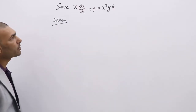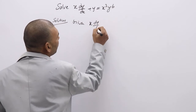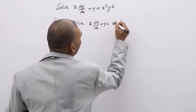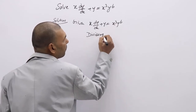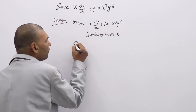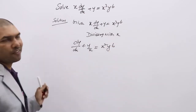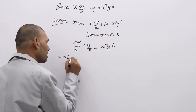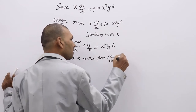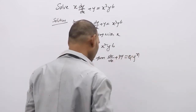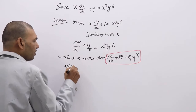Example 1: Solve x·dy/dx plus y equal to x³y⁶. The given DE is x·dy/dx plus y equal to x³y⁶. To get the standard Bernoulli form, divide by x. You get dy/dx plus y/x equal to x²y⁶, which is in the form dy/dx plus Py equal to Qy^N — a Bernoulli differential equation.